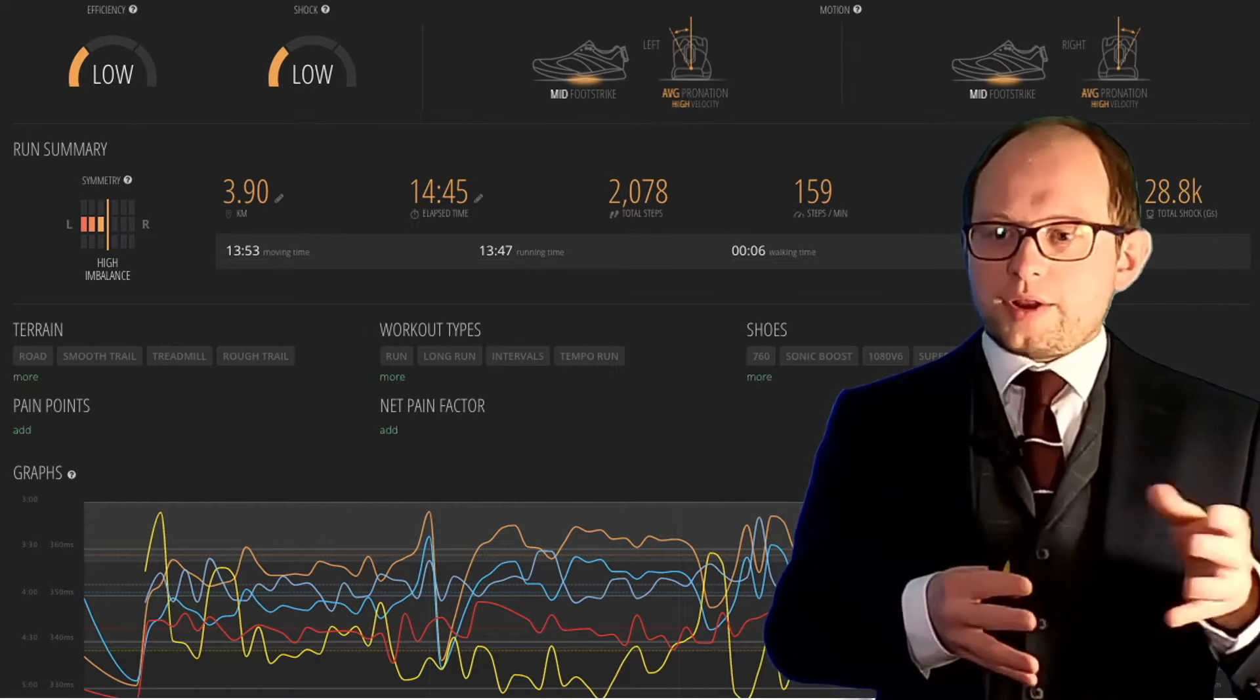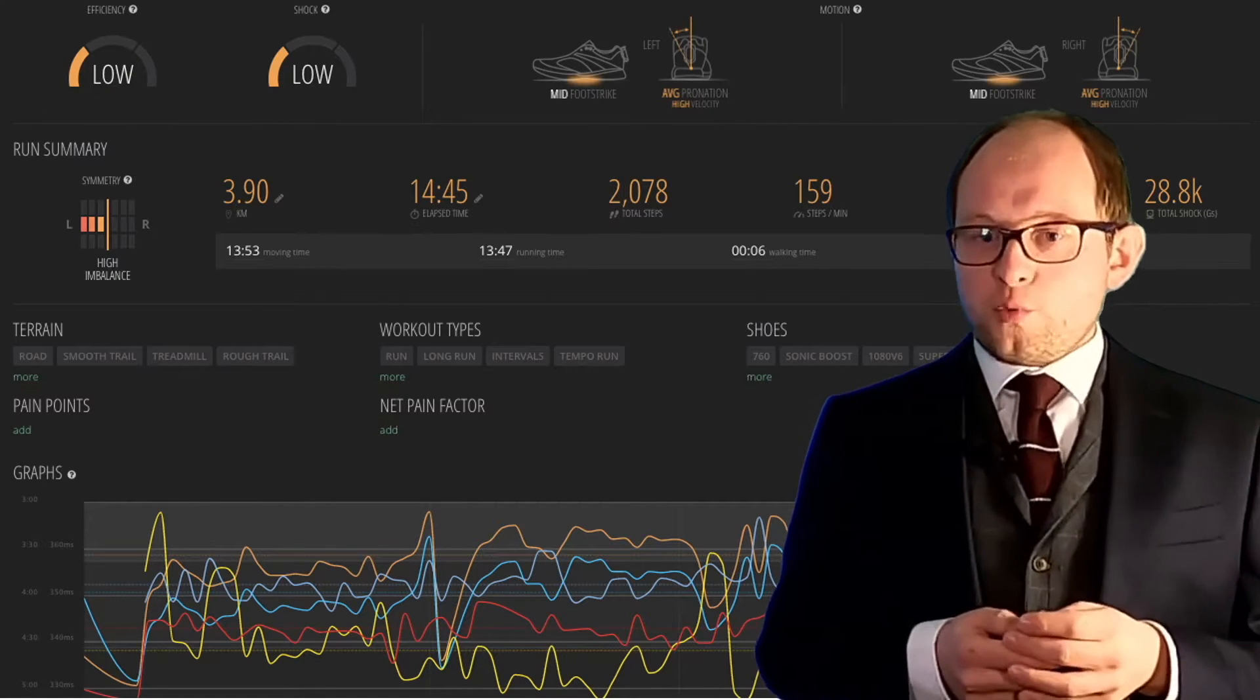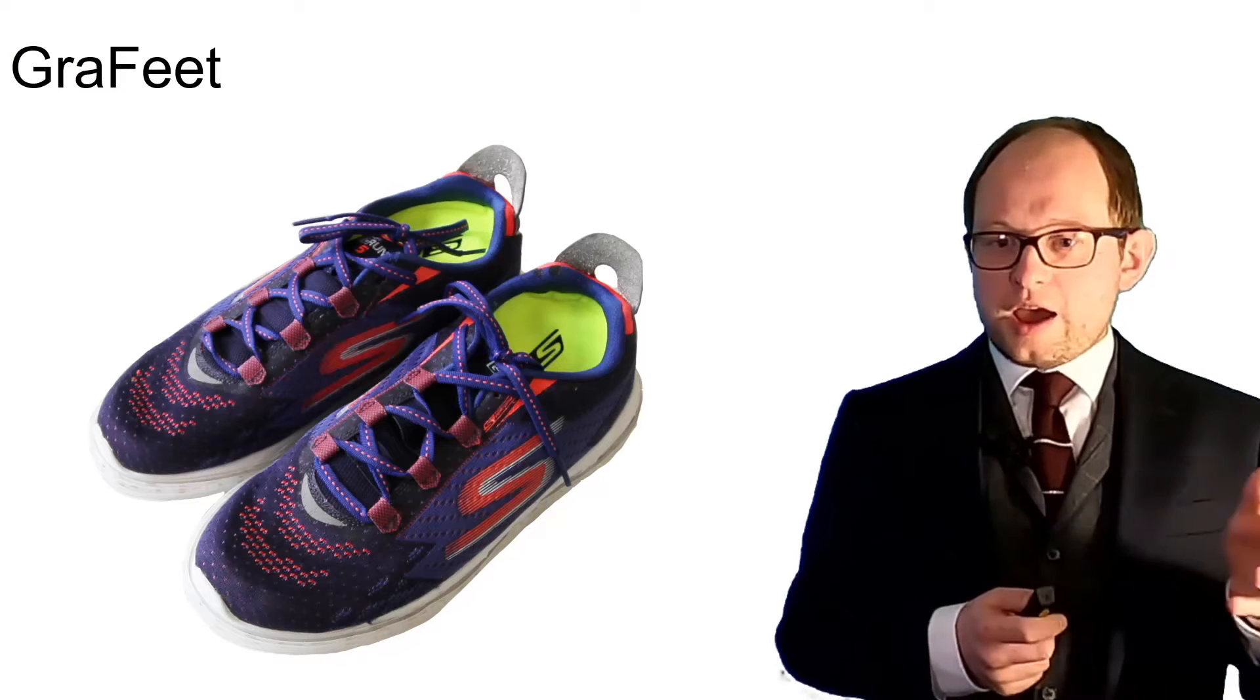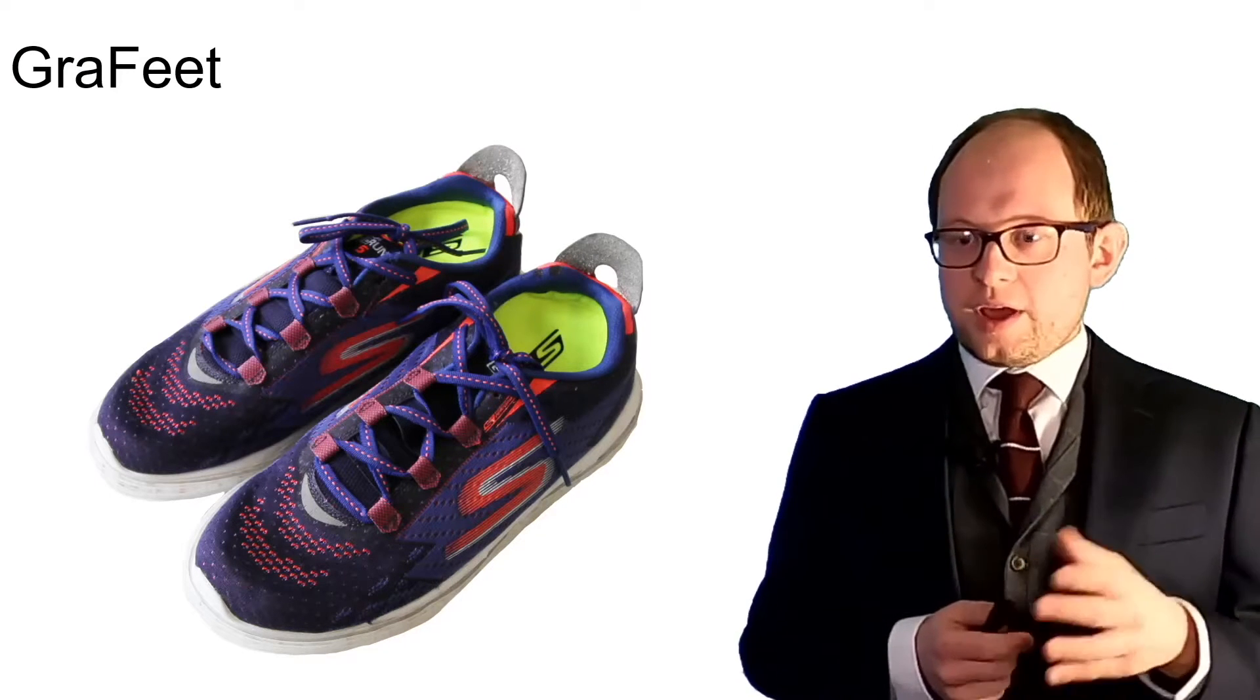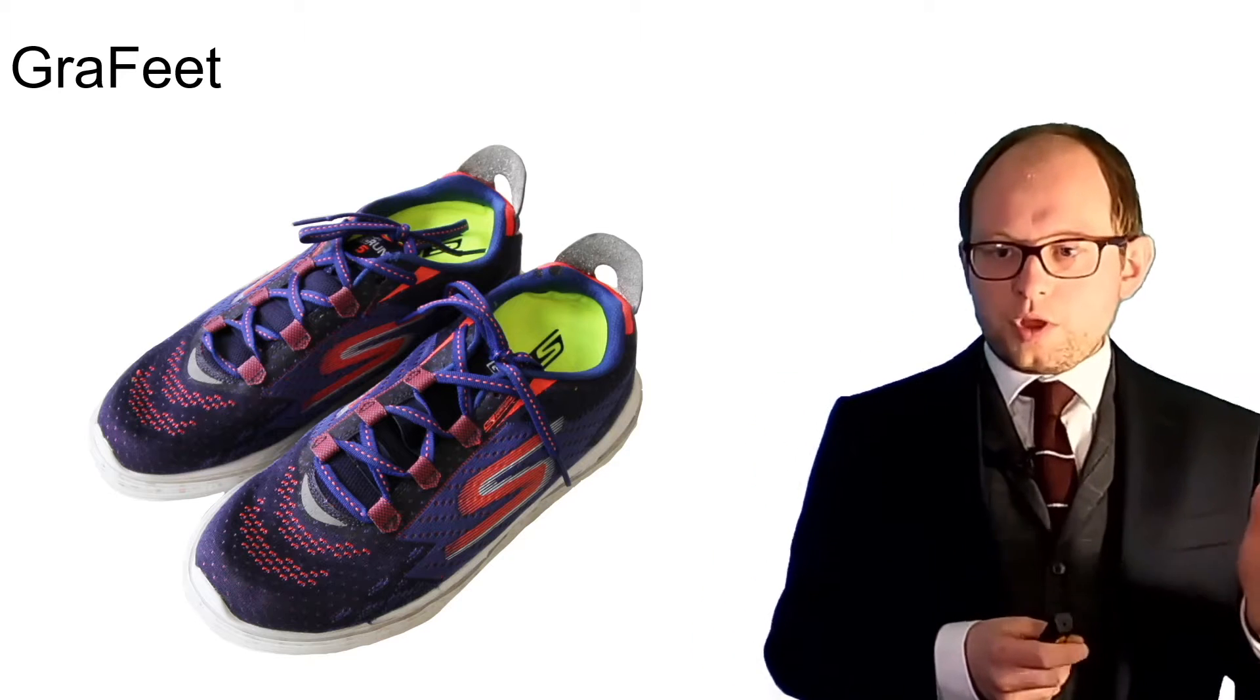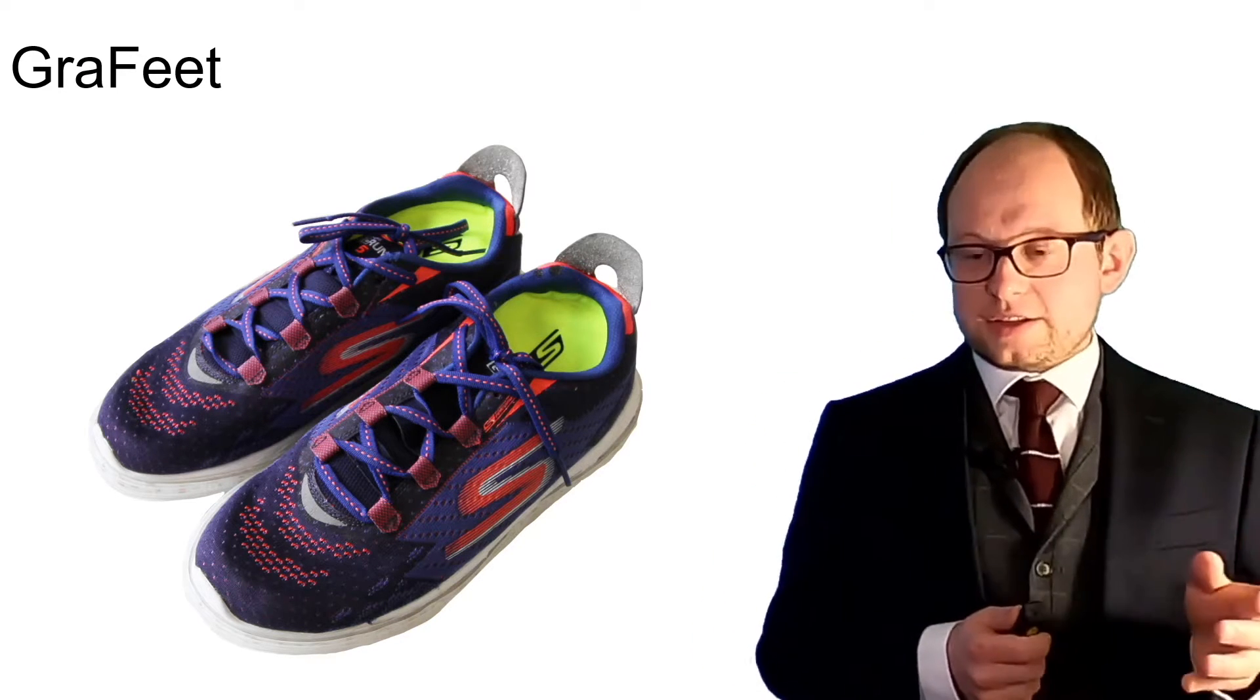How could we move on from these very complicated graphs which are very hard for people to interpret into something that an everyday amateur runner can use. And in the user-centered design process we've developed Graphite, a pair of shoes that helps you understand your running metrics and specifically the data that comes from a running analysis sensor.